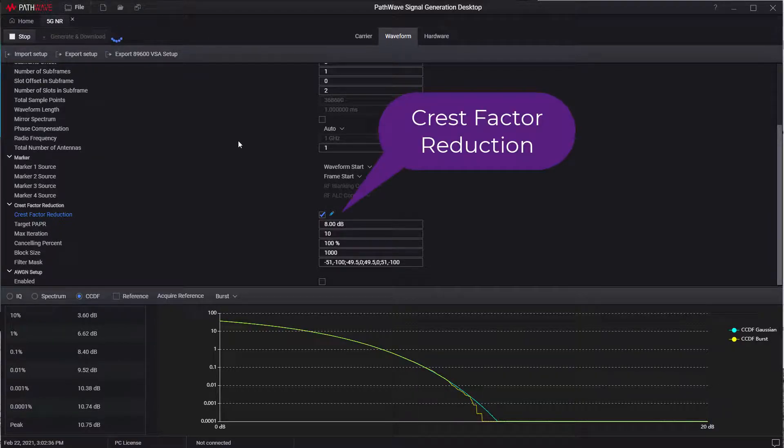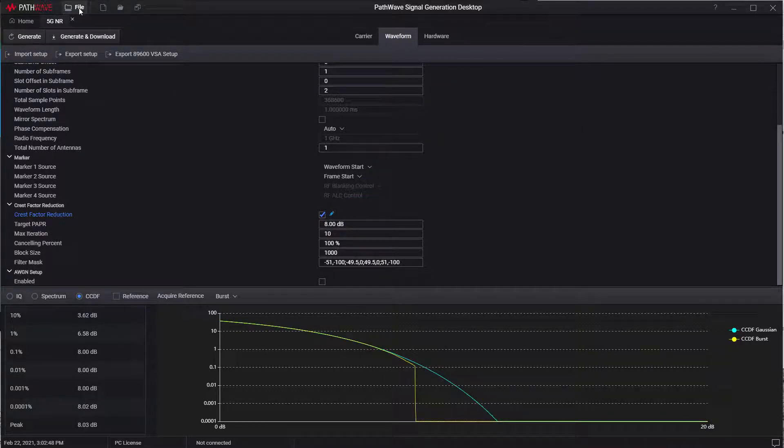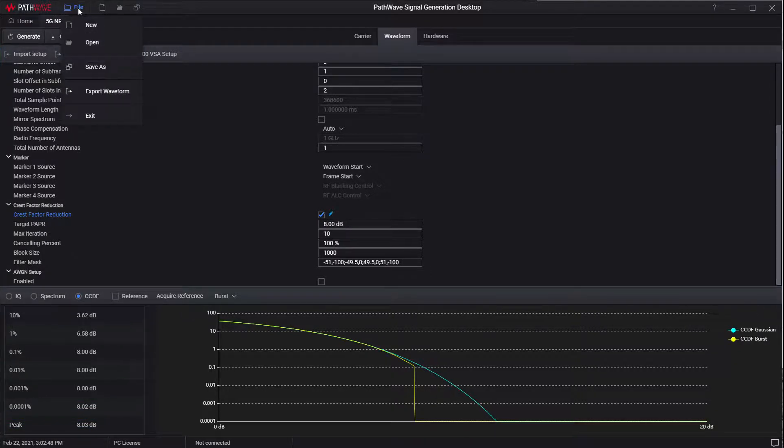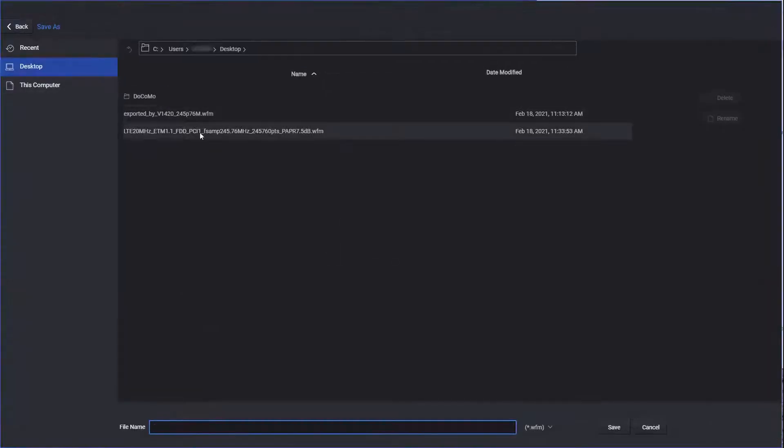And also we adjust the waveform length to 1ms, so it's one subframe. And also we look at the CCDF curve and peak power is 11dB almost. It's a little bit too high, so we use the crest factor reduction capability to reduce the peak power. And now the peak power is reduced down to the 8dB. So now we are ready to export waveform. So we set the file name and export it.